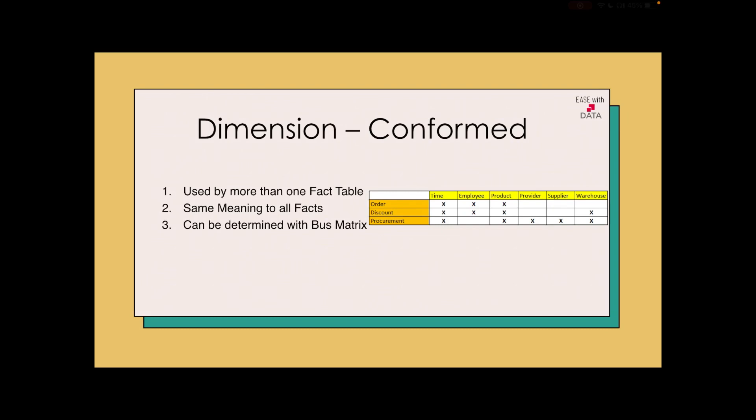A confirmed dimension can also be determined through a bus matrix. You can see a bus matrix here in the PPT.